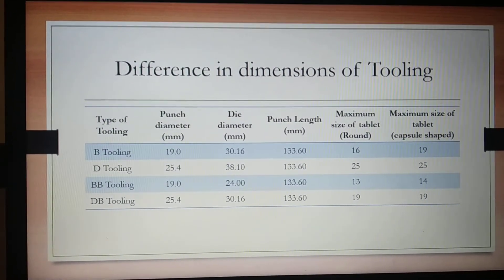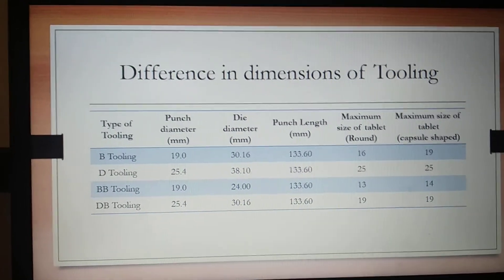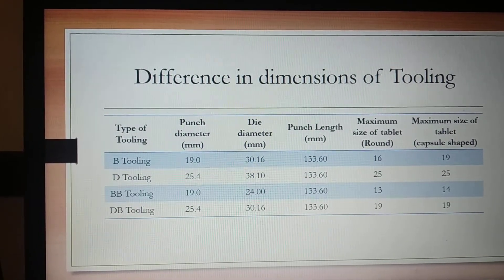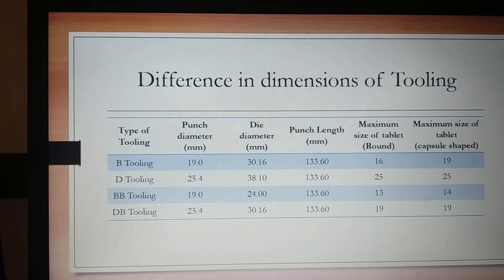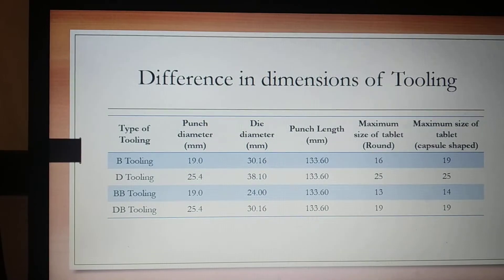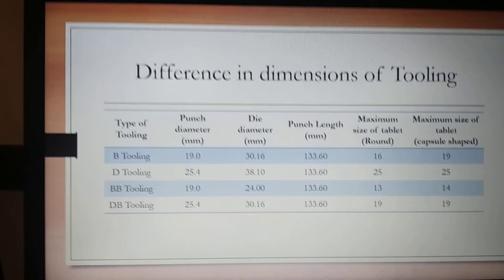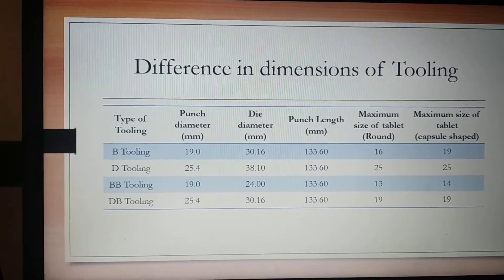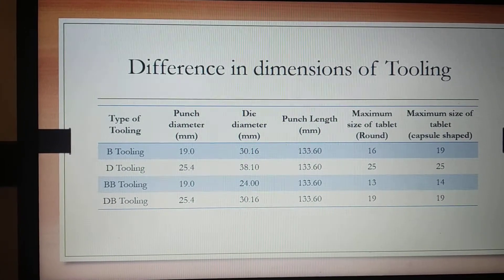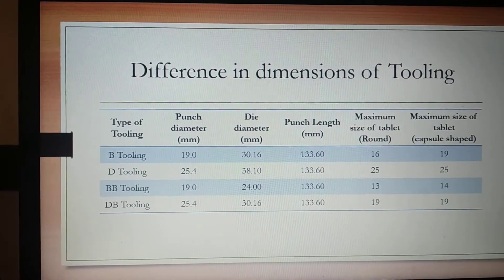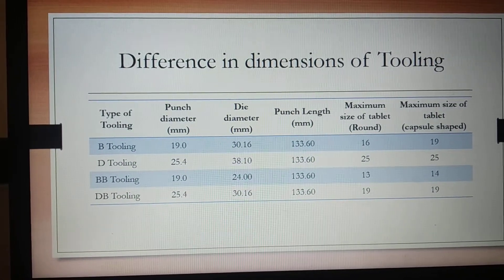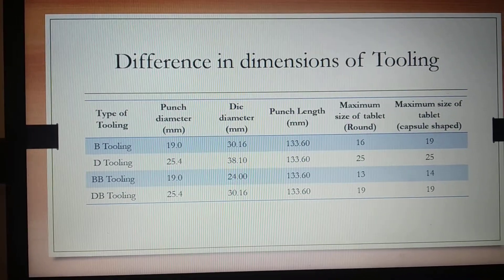Here is a snapshot of the differences in dimensions of the different types of tooling. B and BB tooling both have the same punch diameter of 19 mm, whereas D tooling and DB tooling have a punch diameter of 25.4 mm, which is 1 inch. For die diameter, B tooling and DB tooling both have the same die diameter of 30.16 mm.